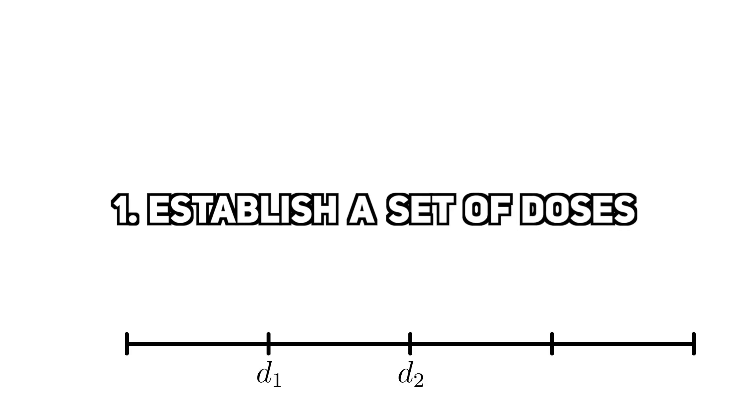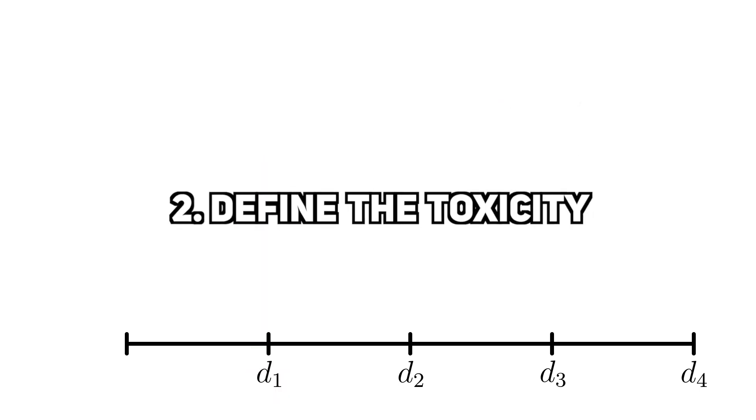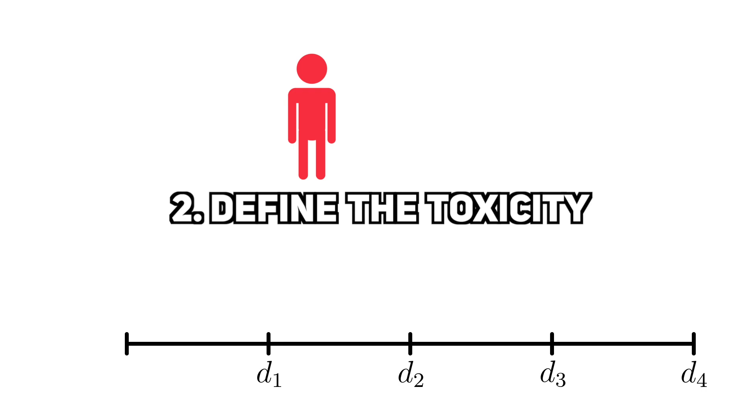Here's how 3 plus 3 works. First, we establish a set of doses that we want to test out. Usually, this is done with the Fibonacci sequence, starting with some dose found in animal studies. Then, we define what a toxicity is. A toxicity could be a serious side effect like a bad headache or vomiting. A person will either get a toxicity or they won't.